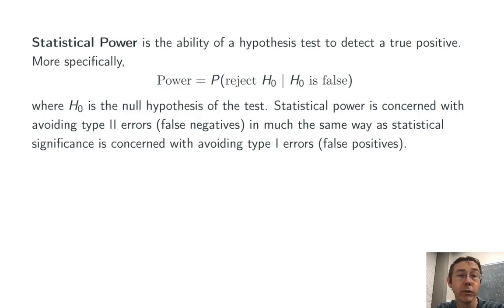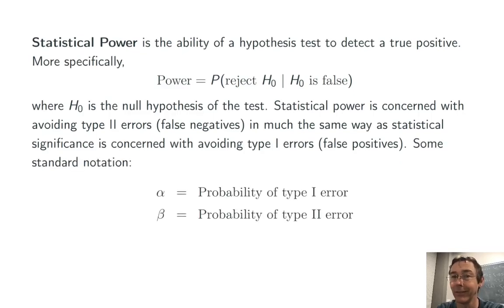Statistical power is concerned with avoiding type 2 errors or false negatives in much the same way as statistical significance is concerned with avoiding type 1 errors or false positives. So they really are two different sides of the same coin.